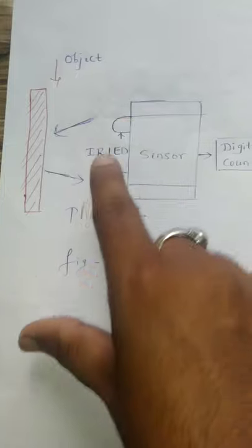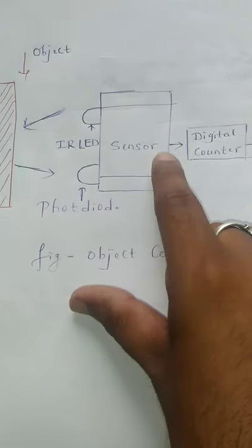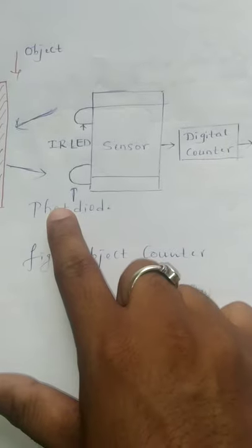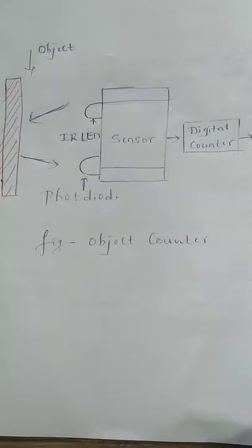In the absence of light, the light is not reflected. Hence the photodiode does not conduct. The display device indicates the output of the counter. Thank you.